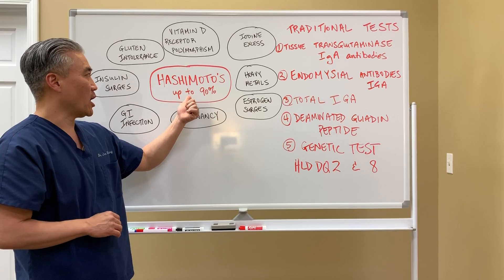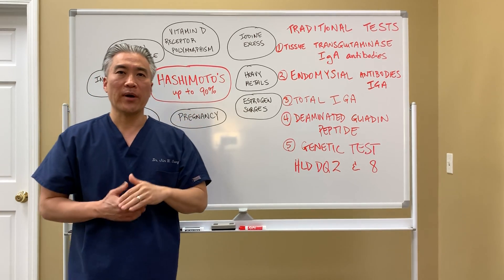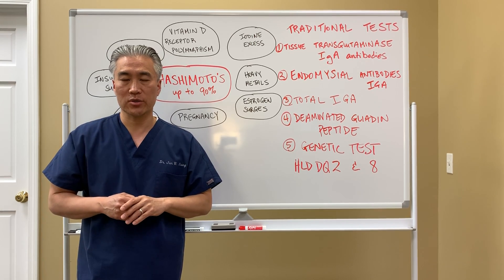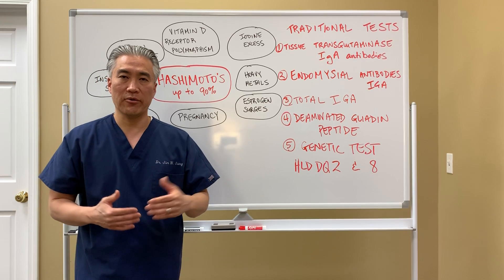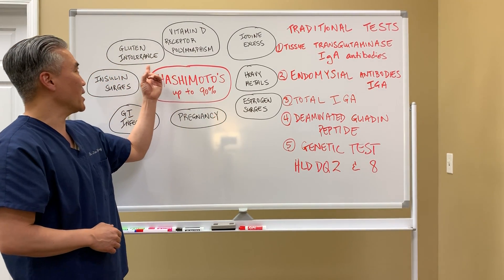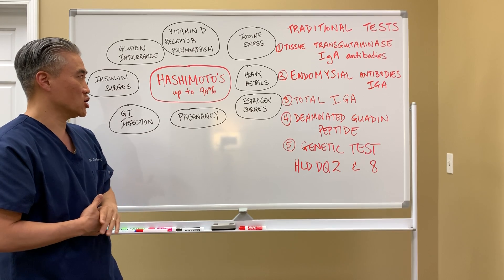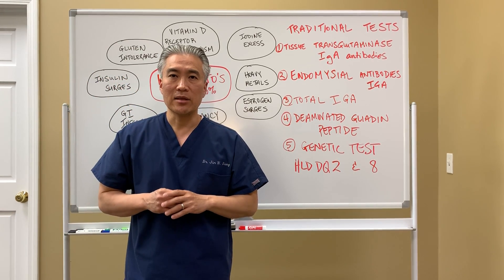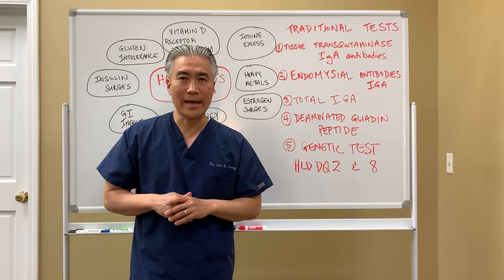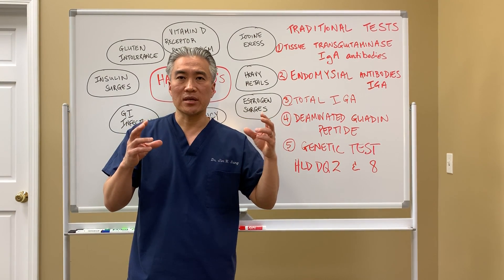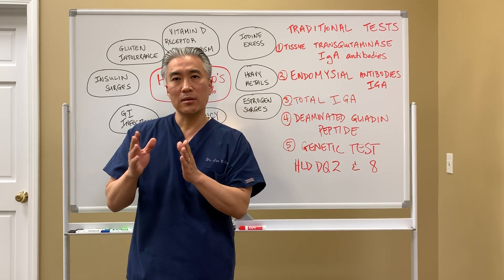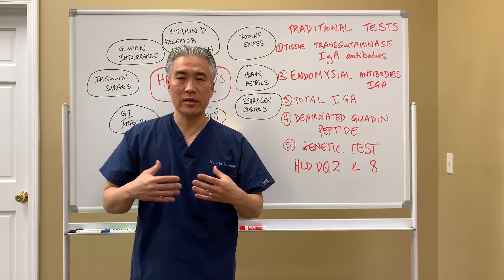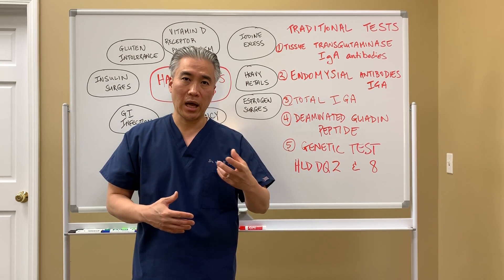Last week we talked about Hashimoto's thyroiditis and how about 90% of hypothyroid patients have an autoimmune condition called Hashimoto's thyroiditis. What impacts Hashimoto's thyroiditis is things like gluten intolerance, because certain gluten peptides can mimic or look like the thyroid gland. Some of the amino acid sequencing of a gluten protein may look very similar to the thyroid gland, so if you eat gluten it creates a problem with thyroid or hypothyroid.